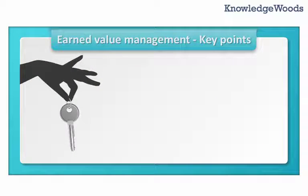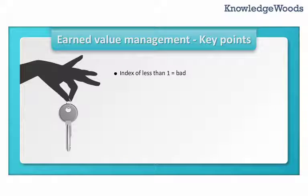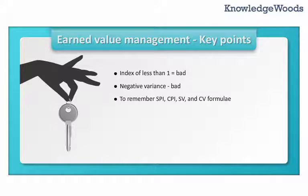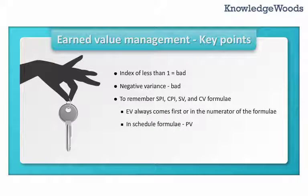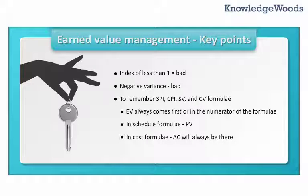Earned Value Management key points: An index of less than 1 is always bad. A negative variance is bad too. Tricks to remember SPI, CPI, SV, and CV formulae: Earned Value always comes first or is in the numerator. In the schedule formulae, Planned Value is the other component. In the cost formulae, Actual Cost is the other component apart from Earned Value.